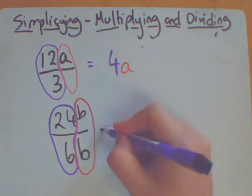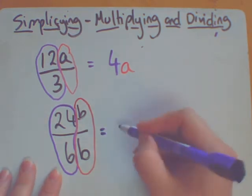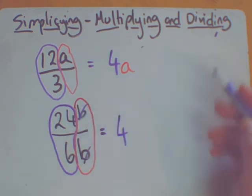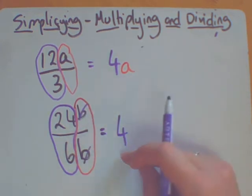So let's do the numbers first. 24 divided by 6 is 4. b divided by b, well, think about when we did the indices, they actually cancel each other out. So there's no b's left, so I have nothing. So my answer is just 4.